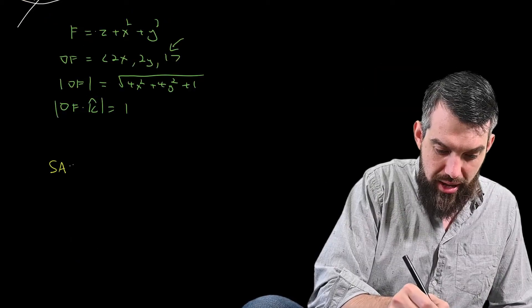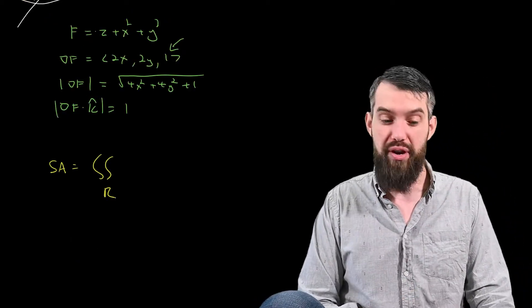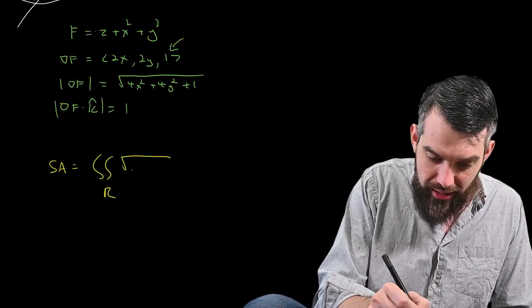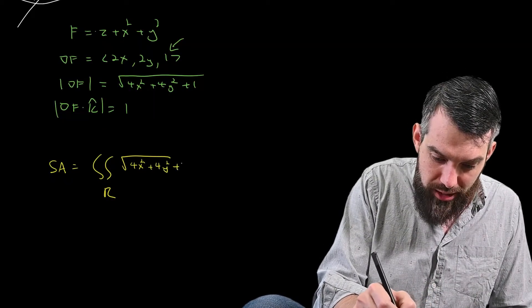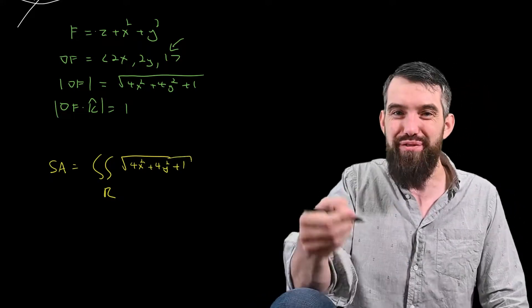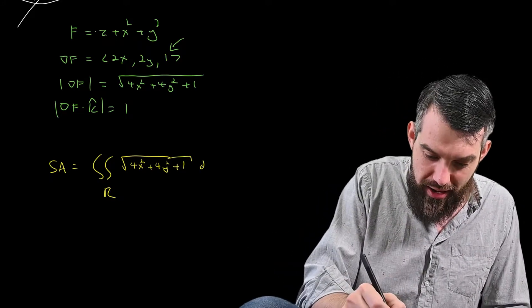So surface area is the double integral over the region. I still haven't figured that out. But the integrand, at least, I can do: square root of 4x squared plus 4y squared plus 1. I could divide by 1, but I just won't, and then dx dy.